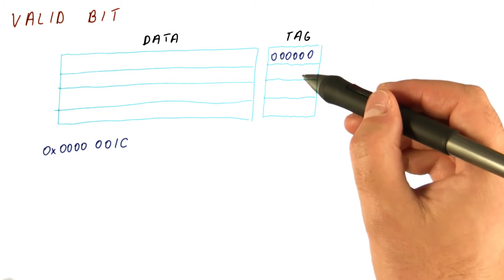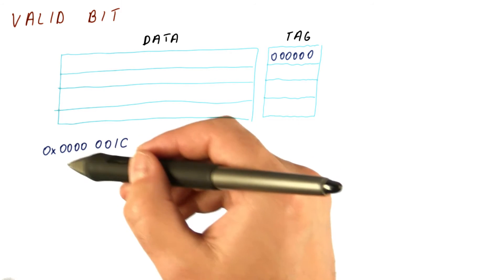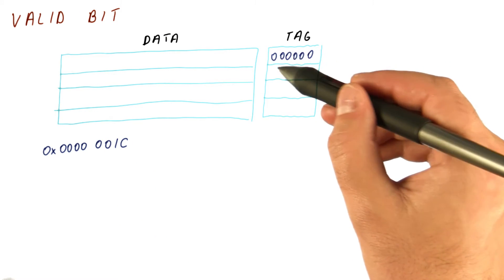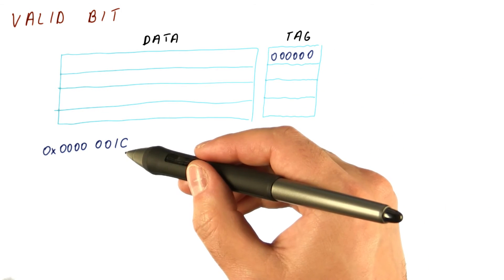Note that any possible value for the tag might match the tag of an actual address. So it's not that it's wrong to initialize to zero; it's that any particular initial value would produce the same problem.